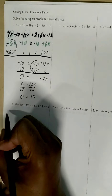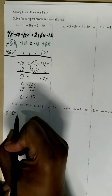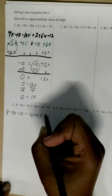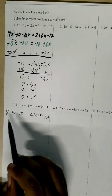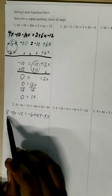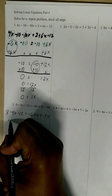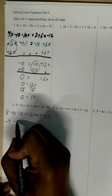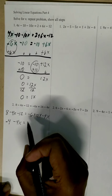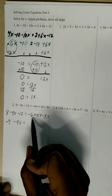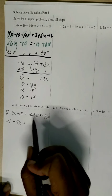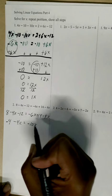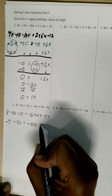Number two: 8 minus 4x minus 12 equals negative 6x plus 14 minus 4x. The like terms on the left side are 8 and negative 12. Different signs subtract, so we get negative 4, and we bring down the negative 4x. On the right side, we combine negative 6x and negative 4x — same signs add, so we get negative 10x. Then we bring down the 14.